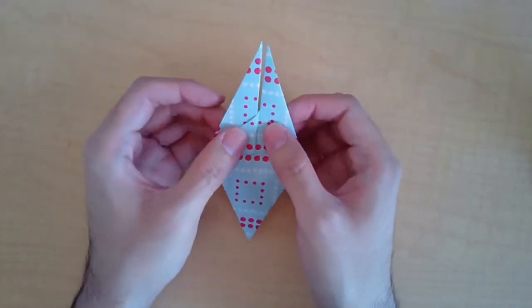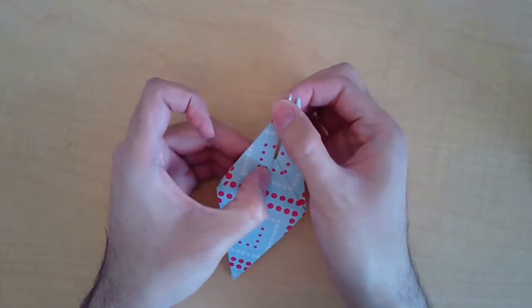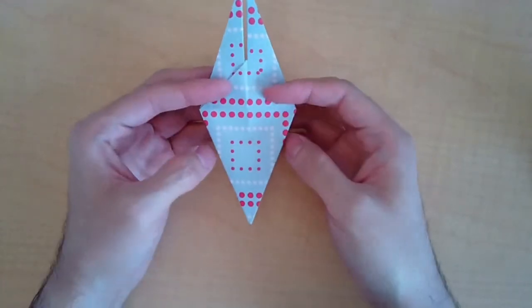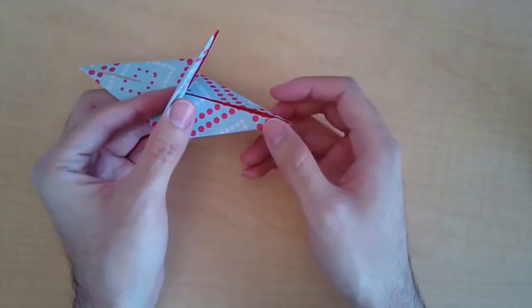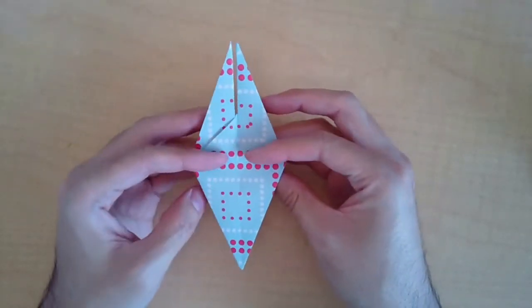So now you're going to have what looks like two little peaks here and then two flaps on the bottom.